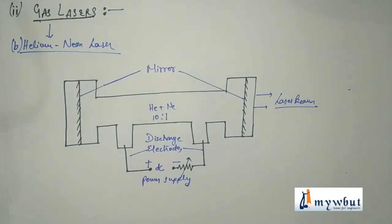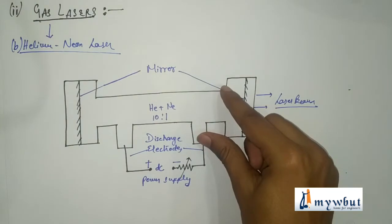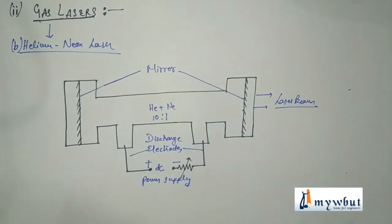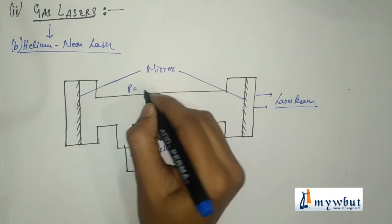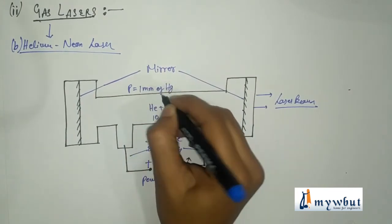It consists of a mixture of helium and neon in a ratio of about 10 is to 1 inside a long narrow discharge tube at a pressure of 1 millimeter, that is pressure equal to 1 millimeter of mercury.